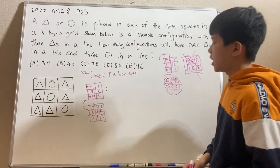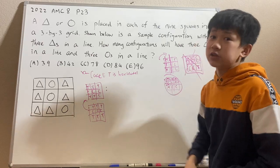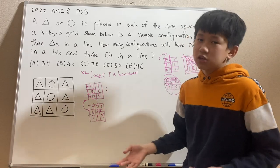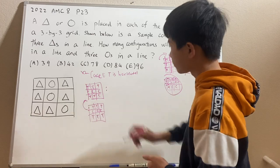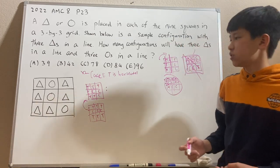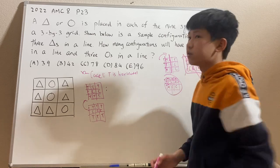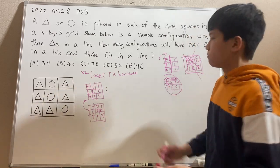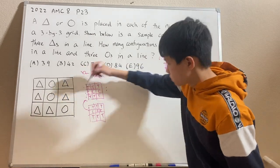This first case is going to be the bottom row is not all the same. So how many cases for this? Well, first of all, how many choices of rows are there for the row of Ts? It can either be this one, this one, or this one. So there's three.